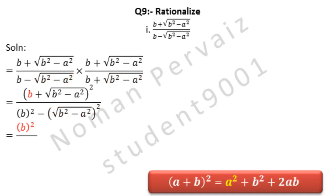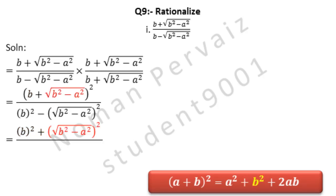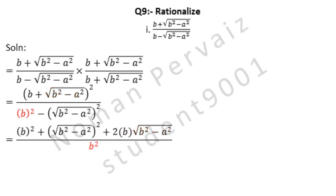Is equal to: here we are going to apply the formula given below. So B squared is written, plus comes from the formula. Look at the formula below: B squared is to be written, so under root B squared minus A squared, whole square, is written. Plus 2 comes from the formula, then B, then under root B squared minus A squared.